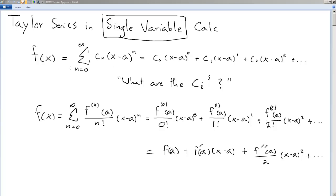The general formula is what's written here in single variable calculus. You've got an infinite sum of some constants times x minus a, where a is the point on the x-axis that you want to center your function about. And then you get this string.